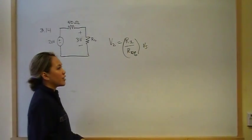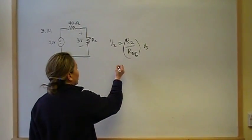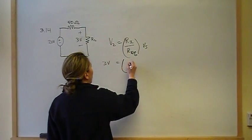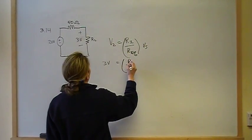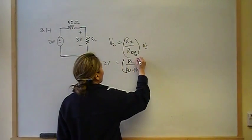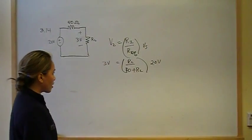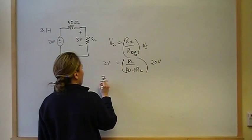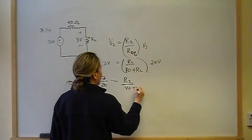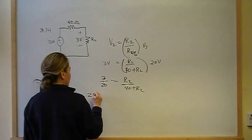So, V2 then should equal R2 over REQ times V source. If you need the background on this problem, it's in the video for problem 3.10. So, R2 is our unknown. We know what V2 is. V2 is 3 volts. And that's going to be R2. We don't know what that is. And REQ is going to be 40 plus R2. And our V source is 20.